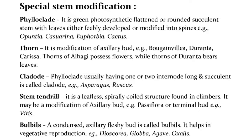Special stem modifications: Phylloclade — it is a green, photosynthetic, flattened or rounded succulent stem with leaves either feebly developed or modified into spines, e.g., Opuntia, Casuarina, Euphorbia, Cactus. Thorn — it is a modification of axillary bud, e.g., Bougainvillea, Duranta, Carissa; thorns of Alhagi possess flowers while thorns of Duranta bear leaves. Cladode — a phylloclade usually having one or two internodes, long or succulent, e.g., Asparagus, Ruscus. Stem tendril — it is a leafless, spirally coiled structure found in climbers; it may be a modification of axillary bud (e.g., Passiflora) or terminal bud (e.g., Vitis). Bulbils — condensed axillary fleshy buds called bulbils help in vegetative reproduction, e.g., Dioscorea, Agave, Oxalis.